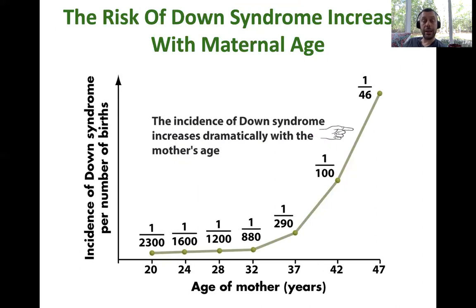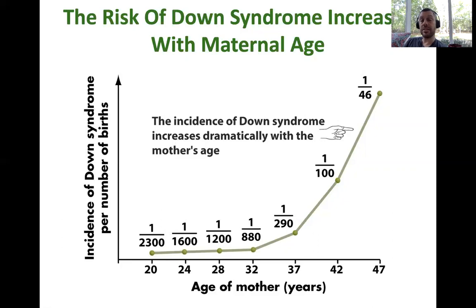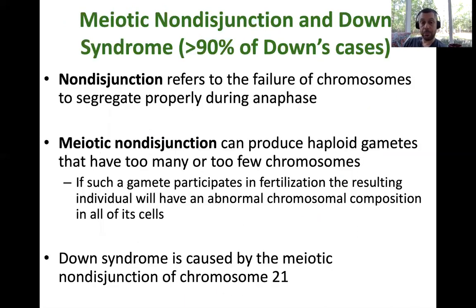Down syndrome is the most commonly known aneuploid condition in humans. The older a woman is when she has a child, the more chance of a child with Down syndrome. At age 20, the chances are one in 2,300; by the late forties, the chances are one in 50 — a huge change. This is thought to be because females are born with all the cells that will become eggs already in their ovaries. Once a month one becomes activated, but because those cells are aging every year, the chance of a non-disjunction event goes up over time.